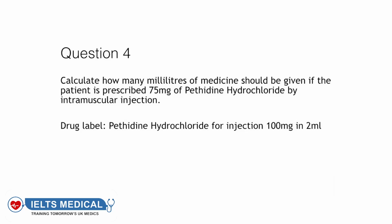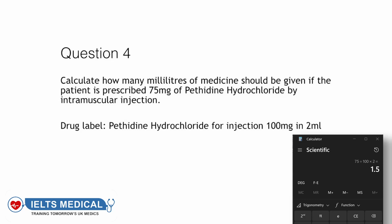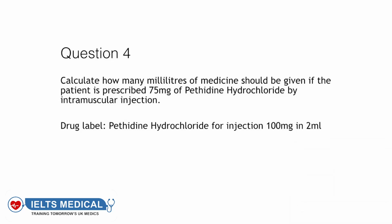Question 4: calculate how many millilitres of medicine should be given if the patient is prescribed 75 milligrams of pethidine hydrochloride by intramuscular injection. The drug label states pethidine hydrochloride for injection, 100 milligrams in 2 millilitres. Use the formula: what you need divided by what you have, multiplied by the volume. So 75 divided by 100, times 2, gives the answer of 1.5 millilitres.